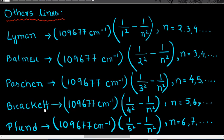There is another scientist named Brackett, who gave an expression for calculating the wave number: the same constant × (1/4² − 1/n²), where n can have values of 5, 6, and so on. At last, a scientist named Pfund gave an expression for the wave number: the same constant × (1/5² − 1/n²), where n can have values of 6, 7, and so on. In all these expressions, the form is the same — only the initial terms 1/1², 1/2², 1/3², 1/4², and 1/5² are changing.